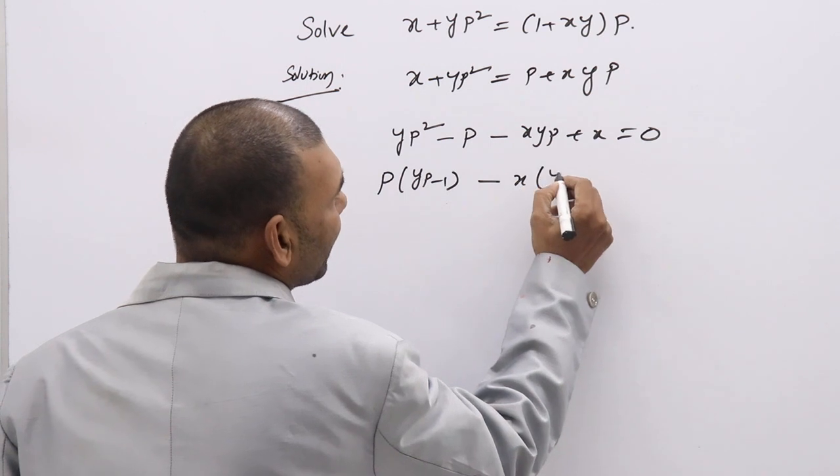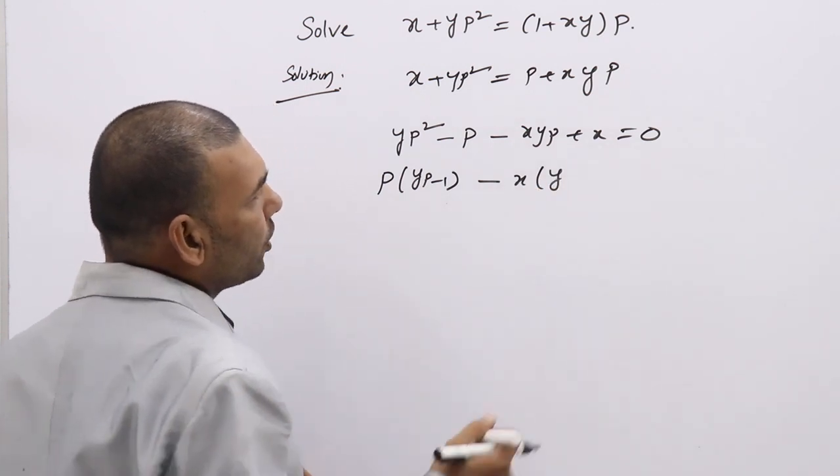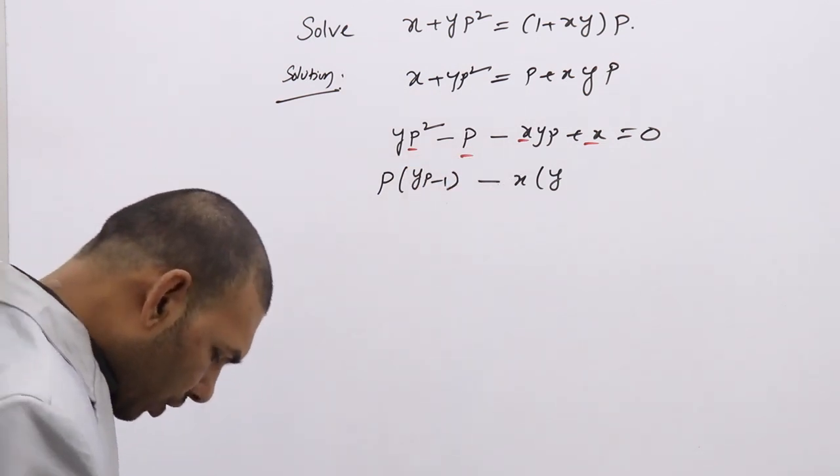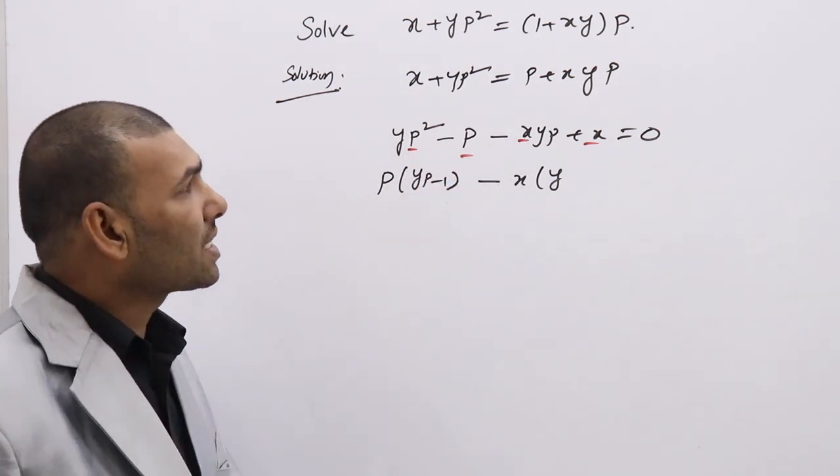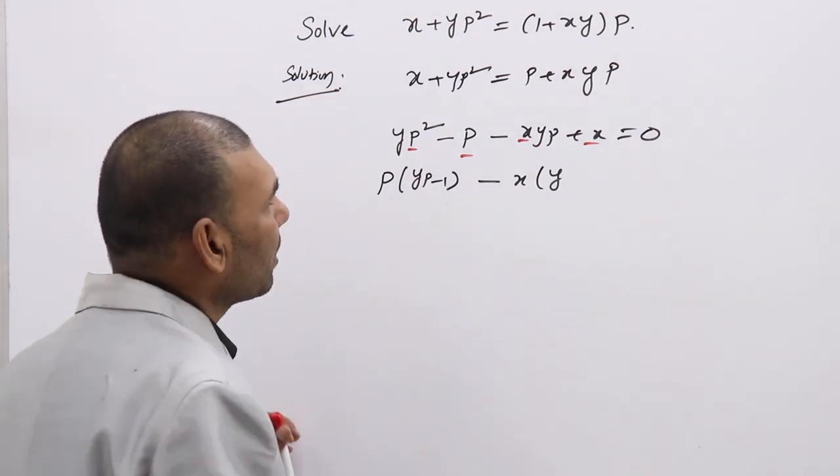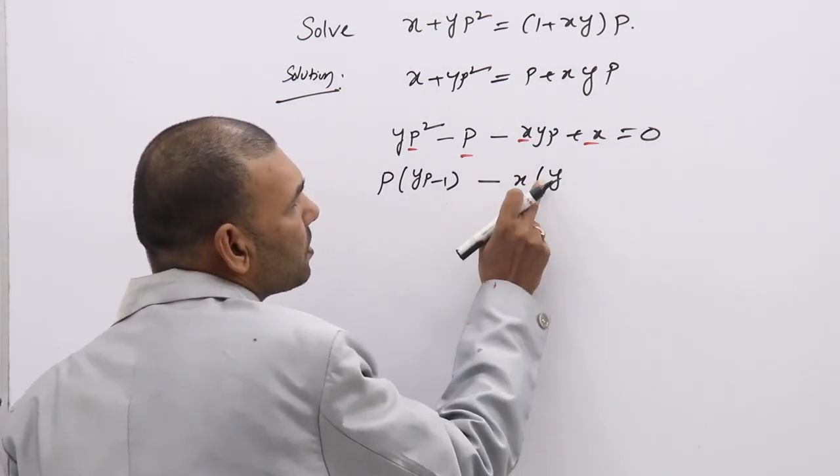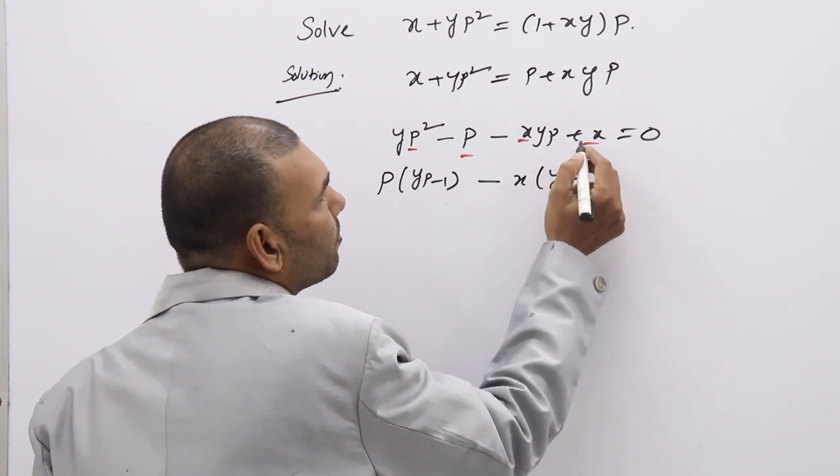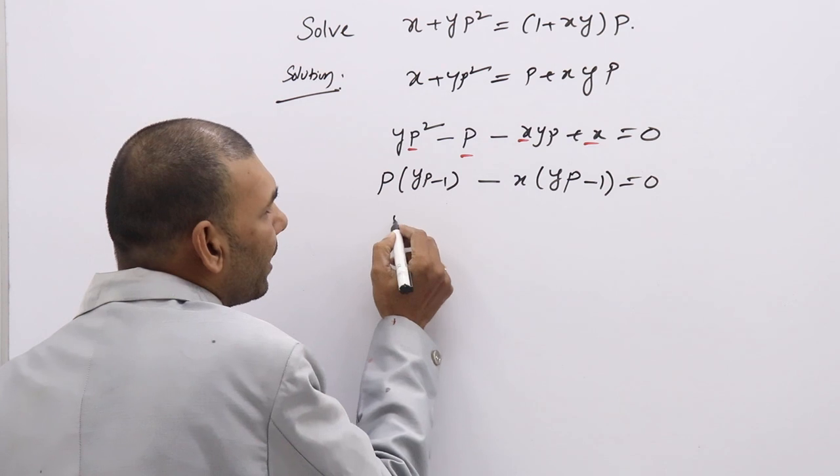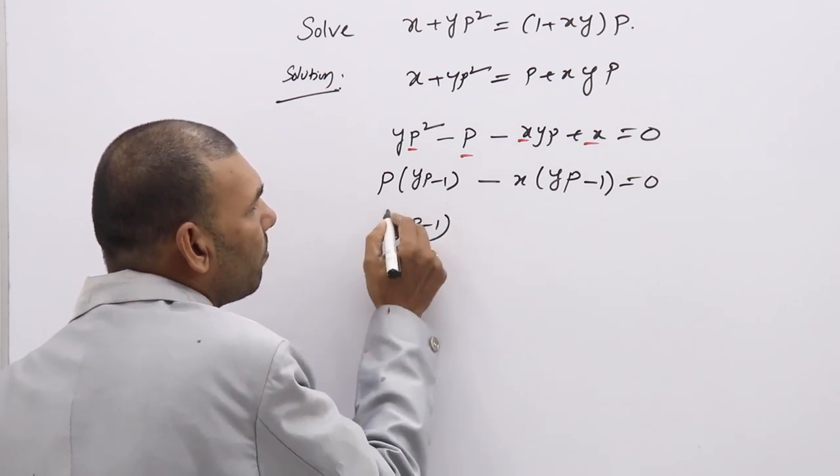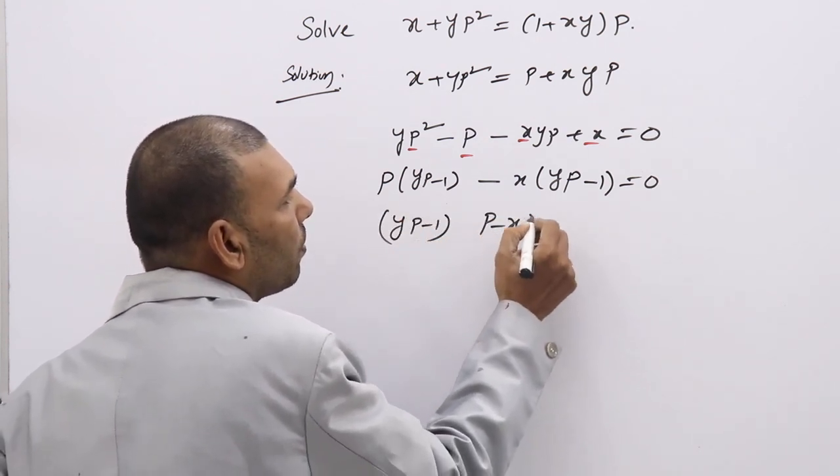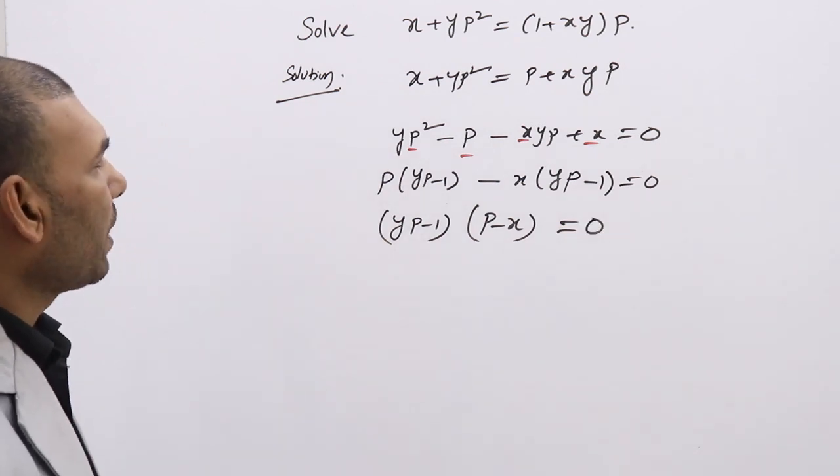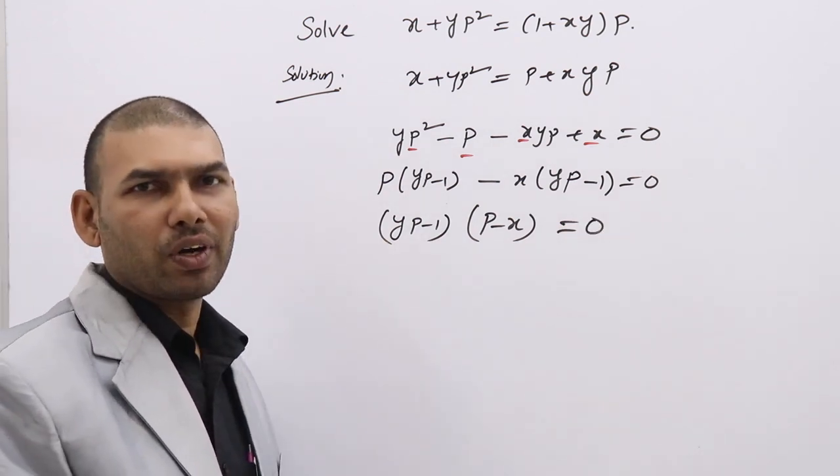From these two which we can take as common, x we can take as common. Because you took x common, here p common, so this becomes plus yp. This plus becomes minus. Again take yp minus 1 as common, you will have p minus x.